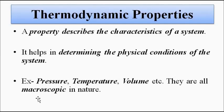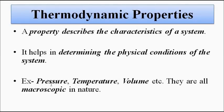Thermodynamic properties are used to define the nature of the system and the physical conditions associated with it. The commonly used properties to define the state of a system are pressure, temperature, and volume. These features give us information about the condition of the system. We can say that thermodynamic properties are the coordinates used to define the state of a system, like x and y coordinates pinpoint a location in the coordinate axis. Similarly, thermodynamic properties define the physical condition of a system.